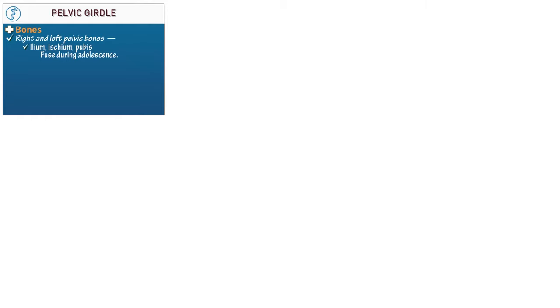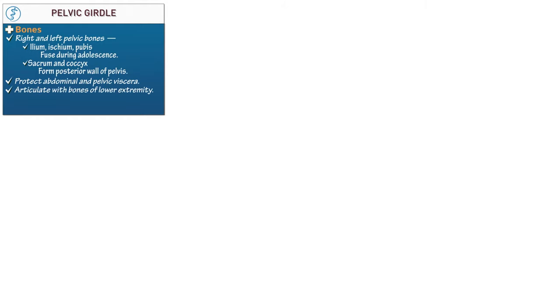These bones and their features will be the focus of this tutorial. The sacrum and coccyx form the posterior wall of the bony pelvis and are addressed with the vertebral column. The bones of the pelvis protect the lower abdominal and pelvic organs, articulate with the bones of the lower extremities, and provide attachment sites for muscles and ligaments of the trunk and lower extremity.